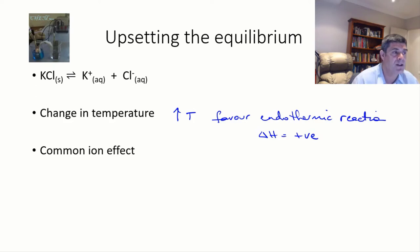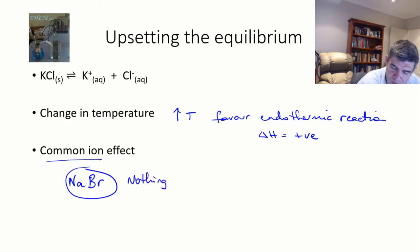There's another thing that we need to look at here, and we'll look at this in a little more detail later on. What would happen if I was to add sodium bromide to this solution? Well, the short answer is nothing. Because when the sodium and the bromine dissociate into the solution, neither of these two ions are part of the original equilibrium. So those will dissolve, and there won't be any interaction.